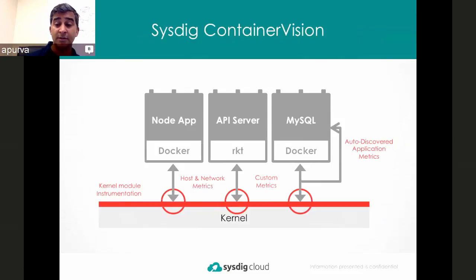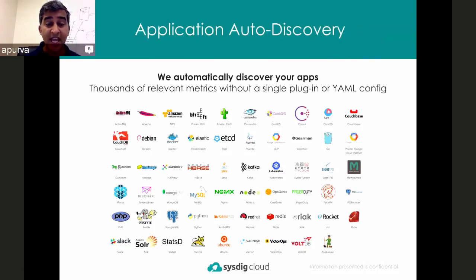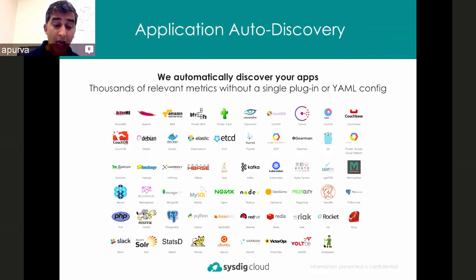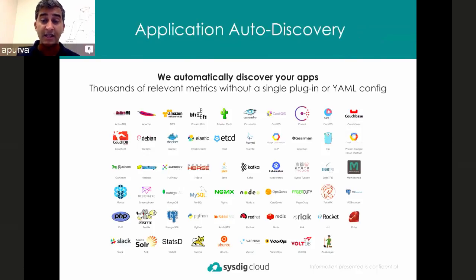Based on all these system calls, we can automatically determine what's running inside the container without any human intervention — 'this is the custom Node application, this is the API server, this is the MySQL database.' Once we know that, we tap into MySQL to collect metrics it naturally exposes. We auto-discover these application metrics without you having to interfere — and you can imagine the power when you're operating a container platform where you may not even know exactly what's been deployed, but you're responsible for guaranteeing visibility.